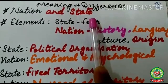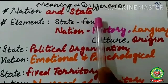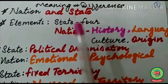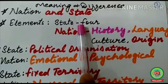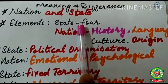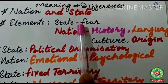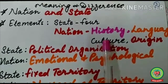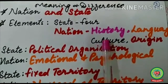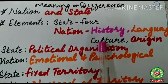The first difference is regarding their elements. The state has four fixed elements. On the contrary, the nation has common history, language, culture, and origin. In the case of nation, these elements are not final — they keep on changing and do not remain the same forever.